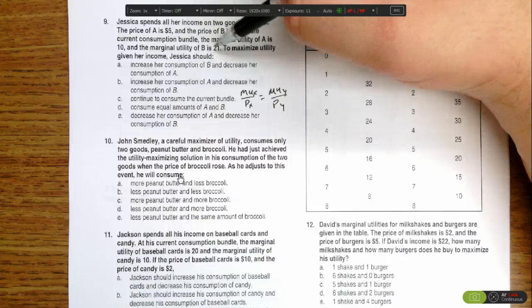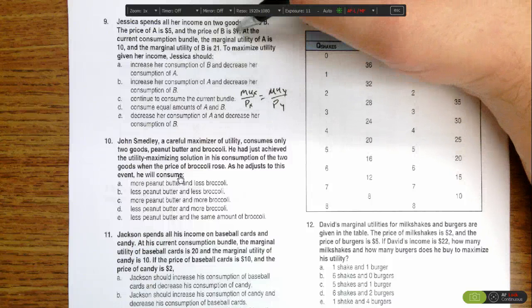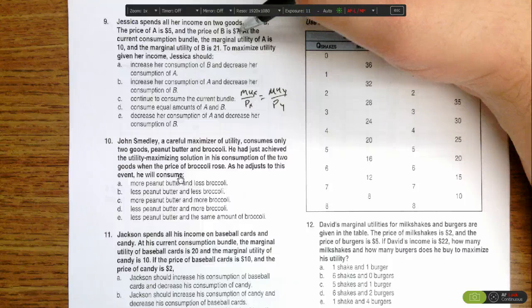The marginal utility of the last unit for B was 21. The price was 7, so she got a marginal utility per dollar spent of 3.